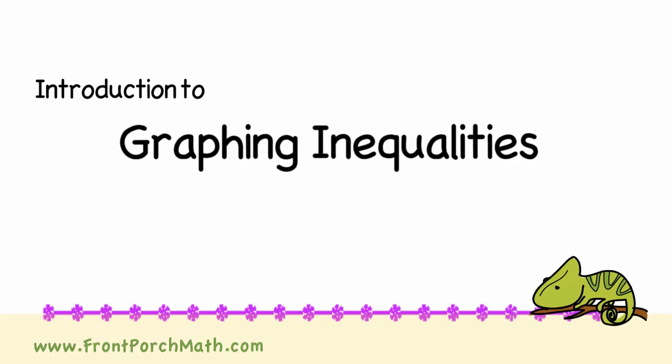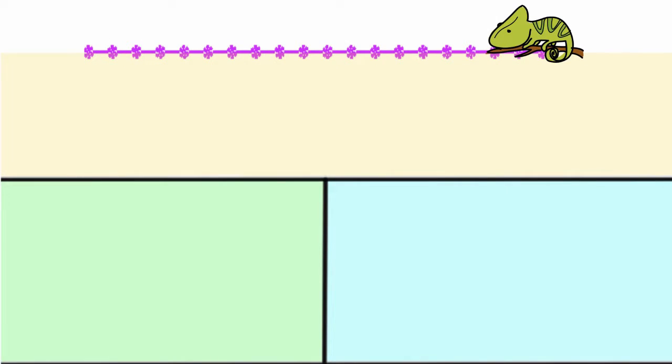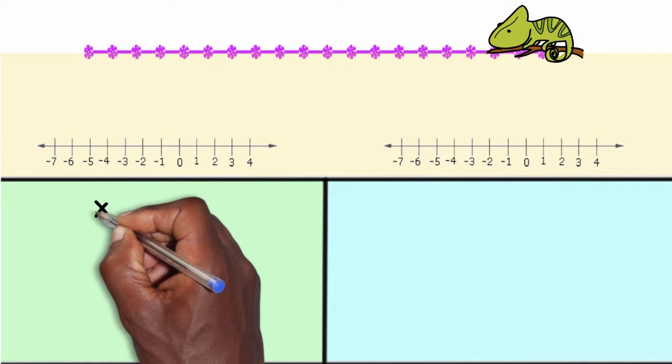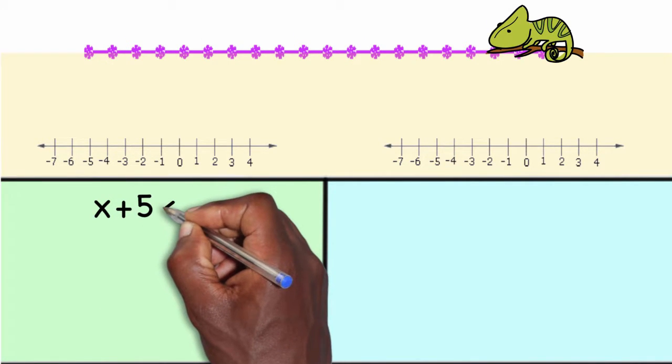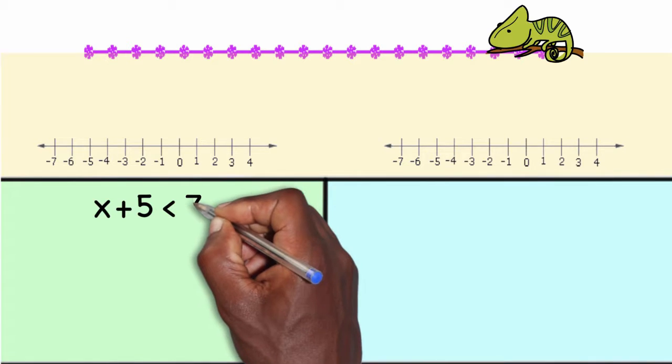Introduction to graphing inequalities. Now we are going to solve not an equation but an inequality. In the inequality we're going to solve some unknown number that when you add 5 to it you get a new number that is less than 7.